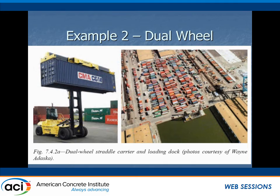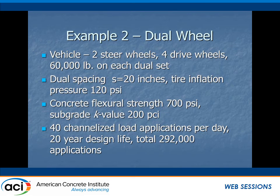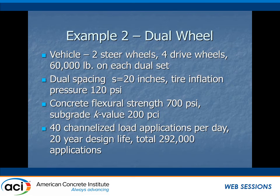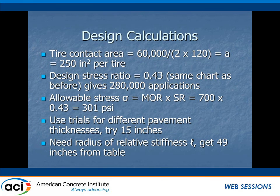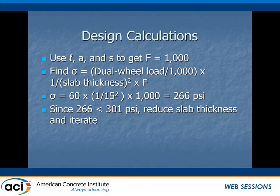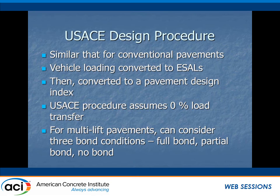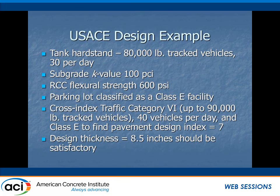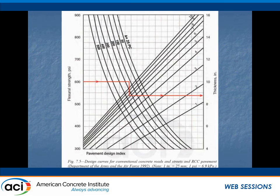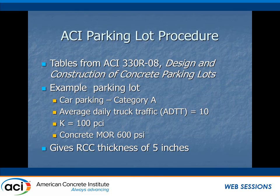A lot of this was back in the 325-10R 1995 document, looking at dual-wheel straddle carriers and other examples. In this case, a 60,000-pound vehicle works out to about a 15-inch thickness going through that example. A Corps of Engineers example would be an 80,000-pound tracked vehicle with 30 per day — through the Corps procedure, an 8½-inch RCC pavement would handle that, using the same procedure as for conventional concrete. For parking lots, streets, and local roads, we just replicated the tables from ACI 330 and 325.